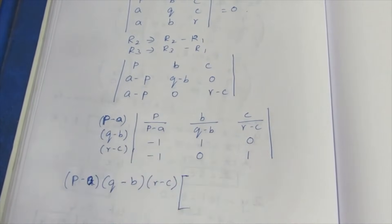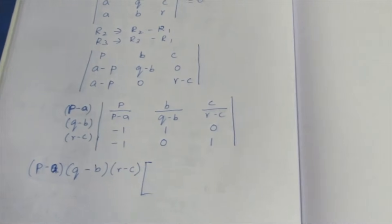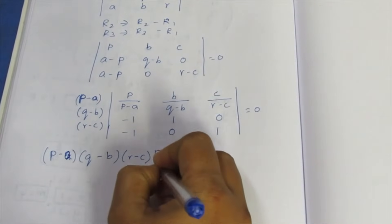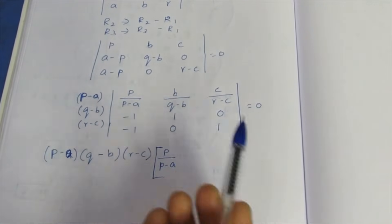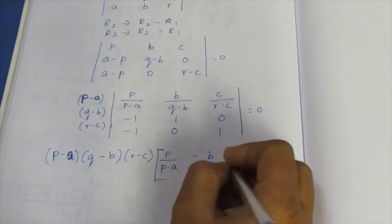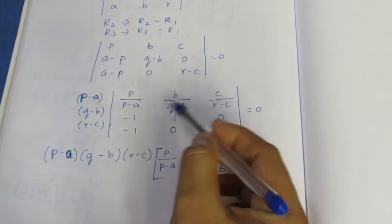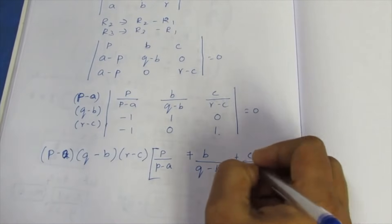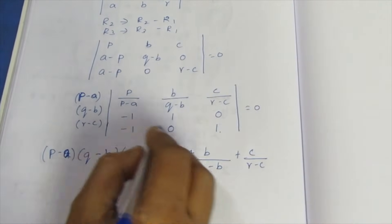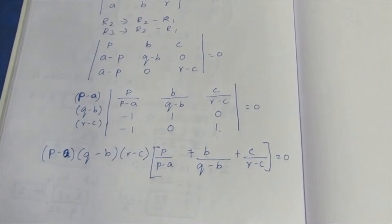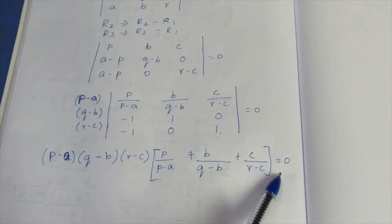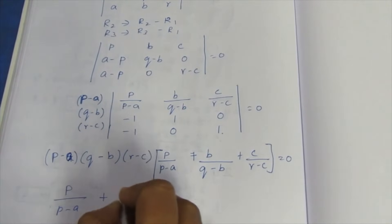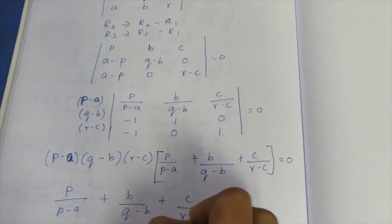Expanding along row 1, this is equal to zero. P/(P-A), cross multiplying: minus B, minus B, minus into minus gives plus side, plus C/(R-C), zero minus into minus gives plus 1. This is equal to zero. Zero by anything will be zero, so balancing gives: P/(P-A) + B/(Q-B) + C/(R-C) = 0.